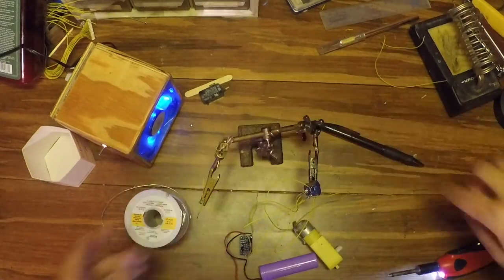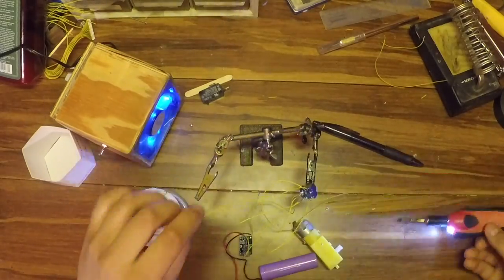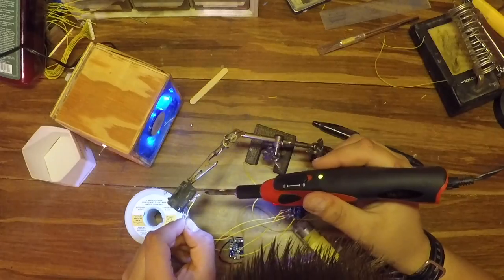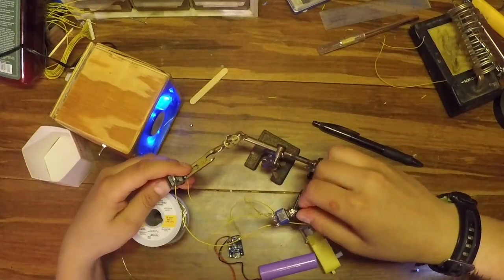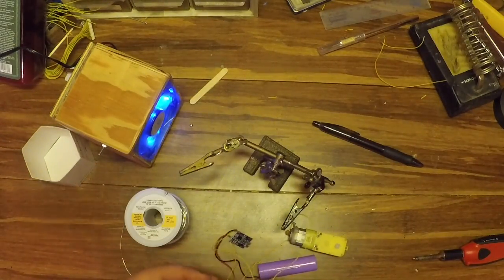Then you're going to want to solder a wire from pin two to the one terminal of the momentary switch and then another wire from the other terminal of the momentary switch to pin five. So basically it's connecting the pins two and five but with a switch in between.